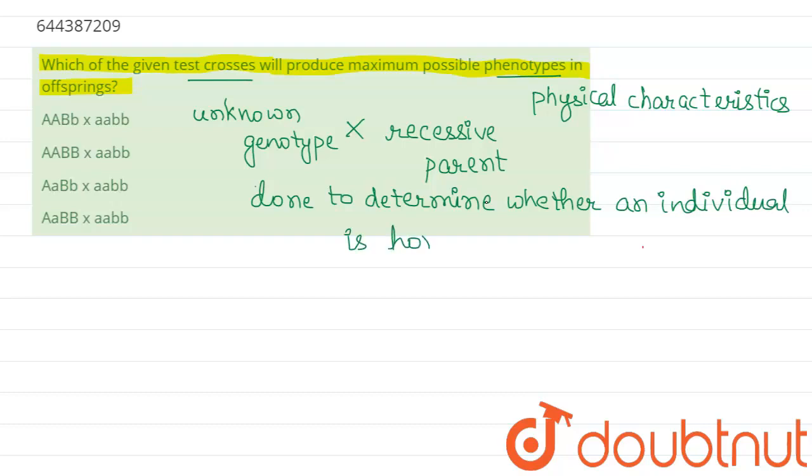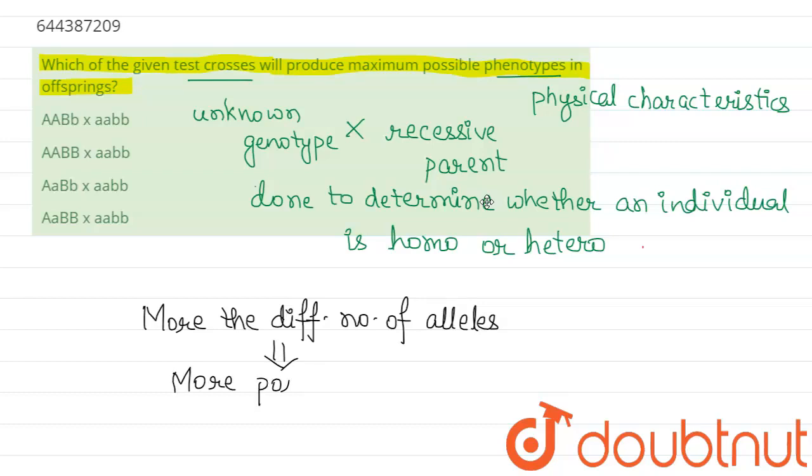And now we'll talk about which test cross will produce maximum possible phenotypes. So for this, you require every allele to be different. More the different number of alleles, more will be the possible phenotype.